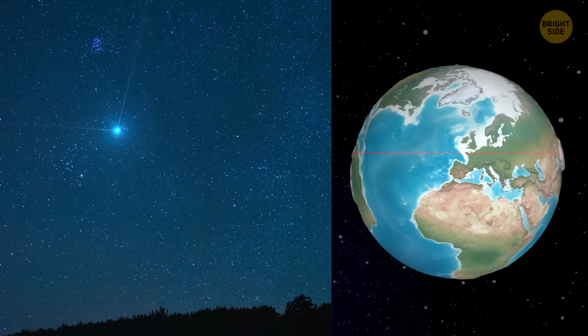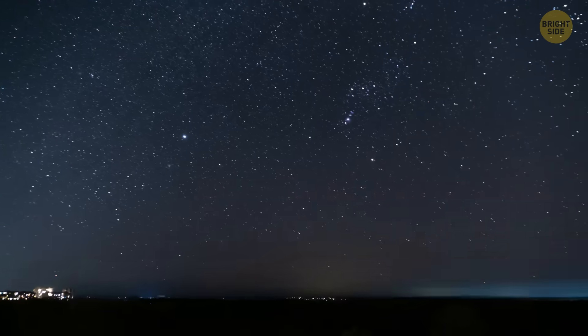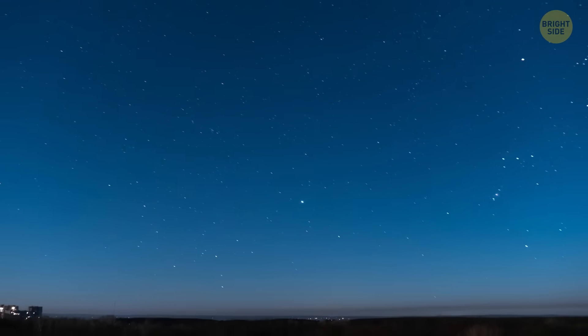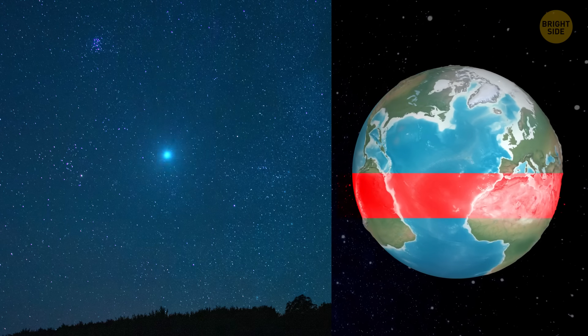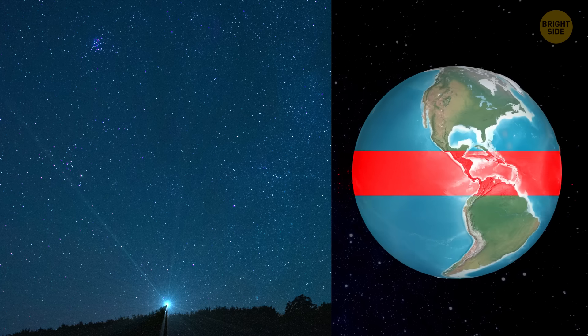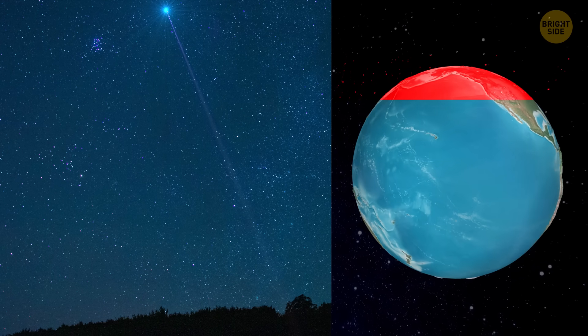Vega is almost directly overhead at mid-northern latitudes on a summer night. It hides behind the horizon for only seven hours a day. You can see it on any night of the year. If you travel farther south, you'll find out that Vega lies below the horizon for longer periods of time. But in Alaska, northern Canada, and some parts of Europe, Vega never sets.